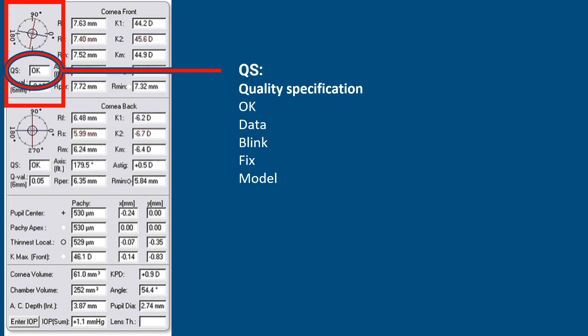Then you have got a QS value. QS value is actually quality specification. If it tells you OK, that means the printout is fine and there's no problem. Other signs indicate you need to repeat the test — for example, some data is missing or the patient is blinking too much. You need to repeat the test to get the message OK; that is what we call quality specification.